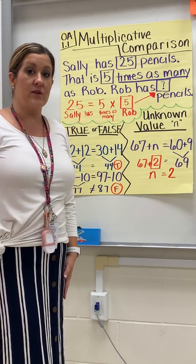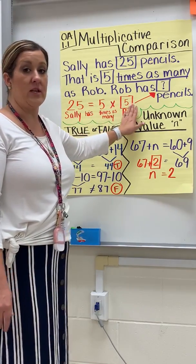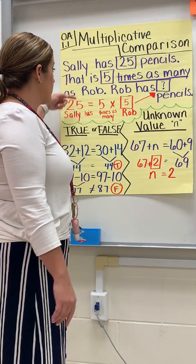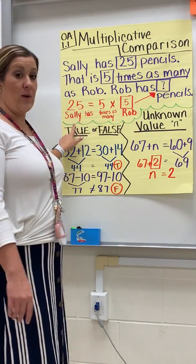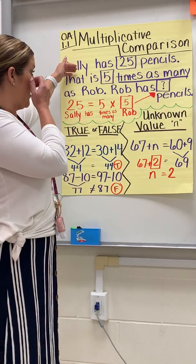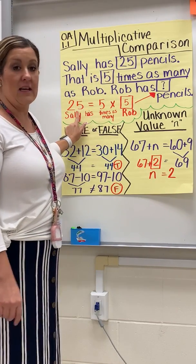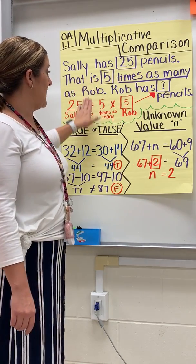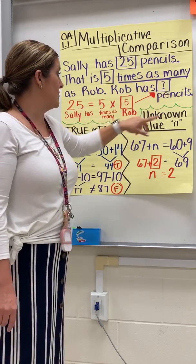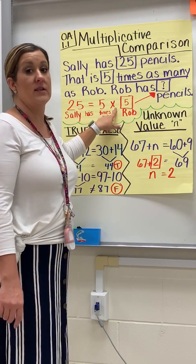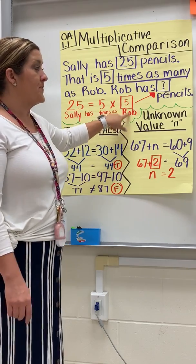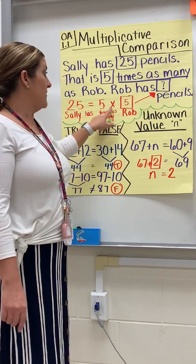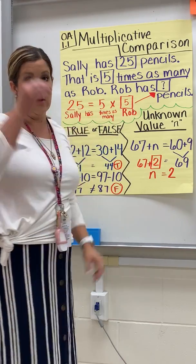I've also taught the children, as they write their equation or as they read their comparison statement, to match what it's telling them and to label. So where it says Sally has, we know it's 25, and then it continues to say that is five times as many — so five times — and then Rob. They're then able to see, once their equation is set up, that five times five would equal 25.